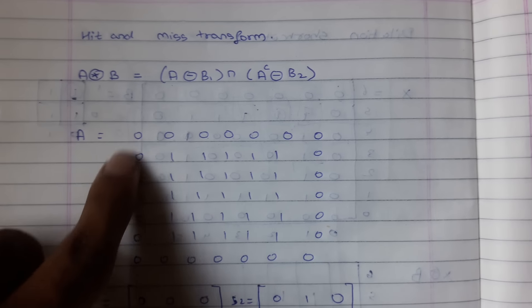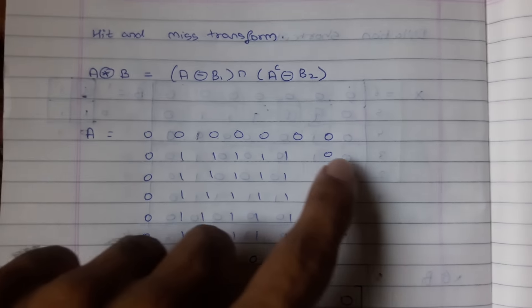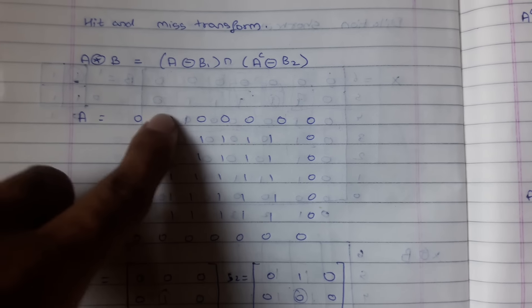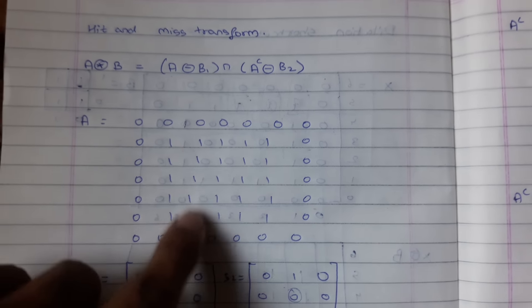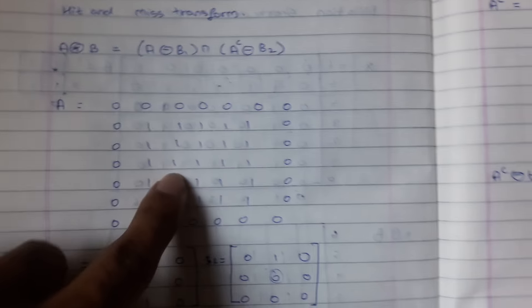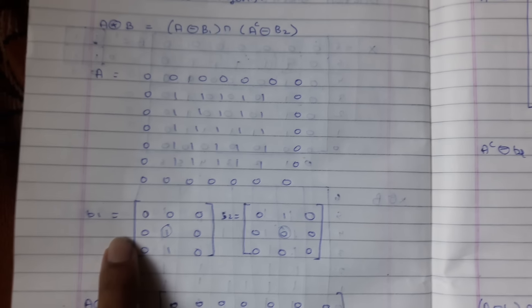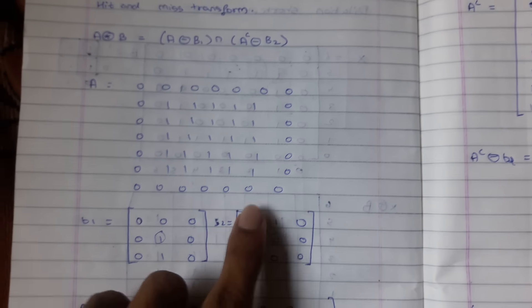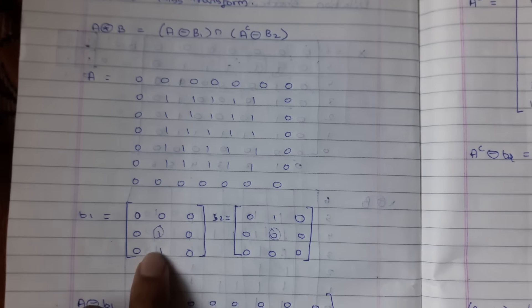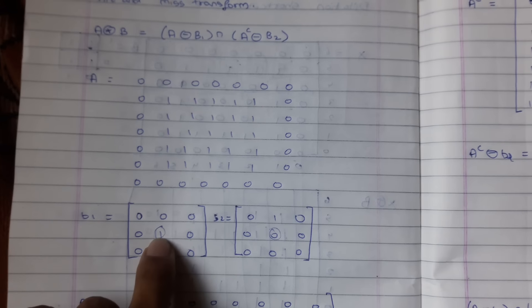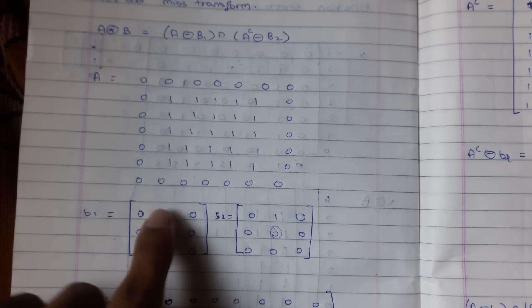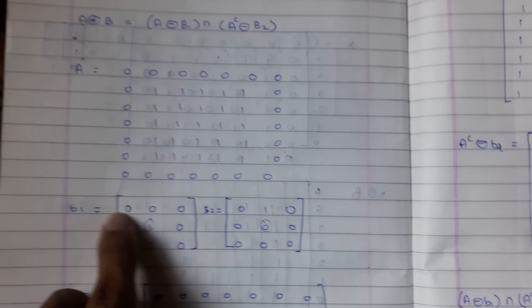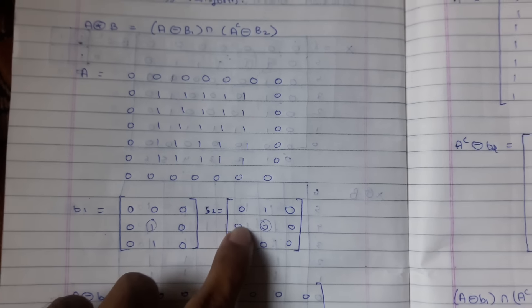Here is image A, which is a square box. These are the two structuring elements B1 and B2. Since this is a 3x3 matrix, the center element is the seed point.